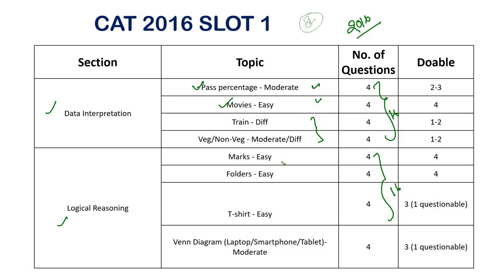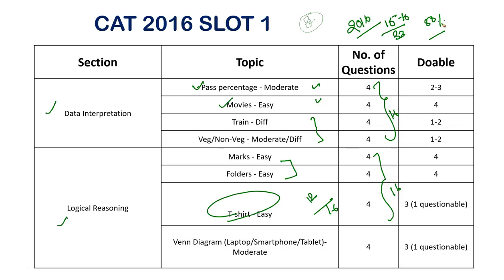Looking at the Logical Reasoning section in 2016 Slot 1 — sets based on marks and folders were manageable, and the t-shirts question was also manageable. So in LR, out of 16 questions, three sets were actually manageable, giving you around 12 manageable questions. In the worst scenario, in 60 minutes you could have managed to solve a bare minimum of 15-16 questions — 50% of the paper — which would have taken you to 95 percentile plus.